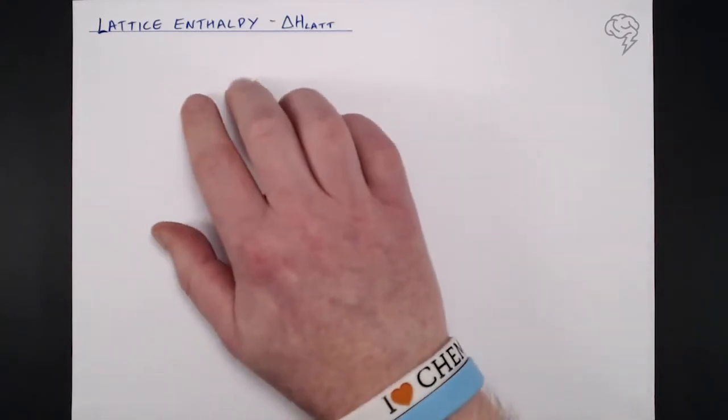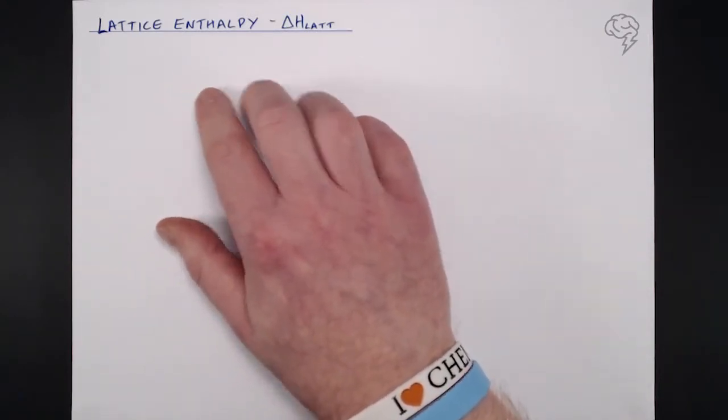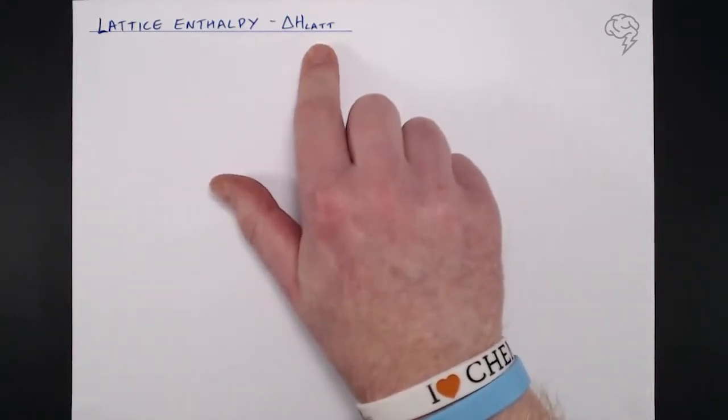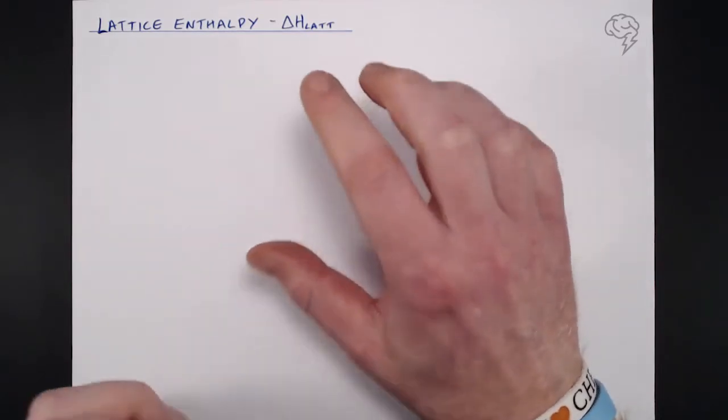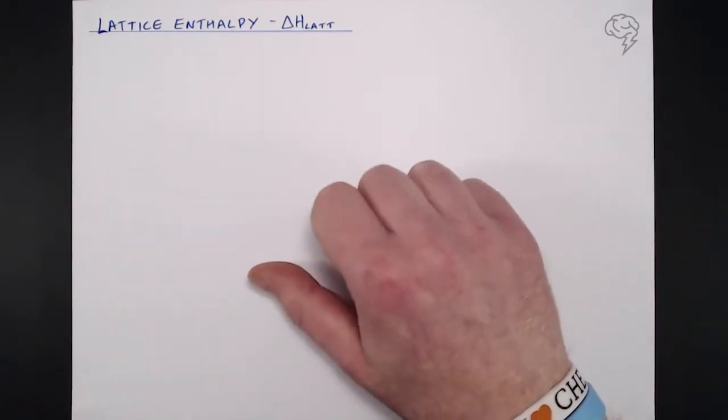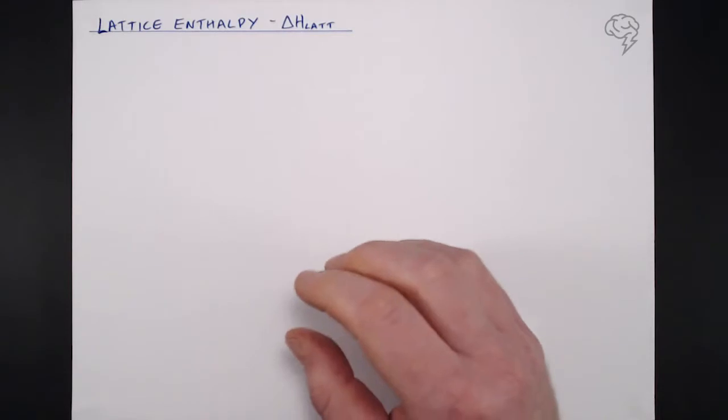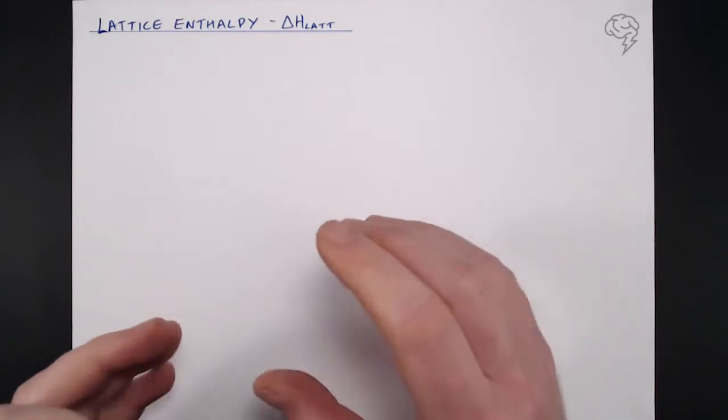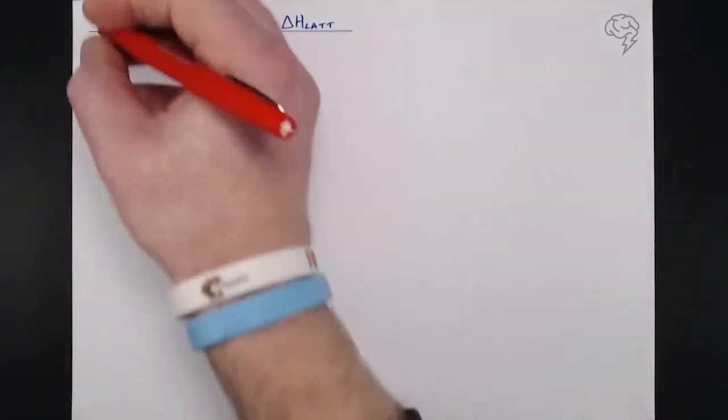We're going to dive right in on Lattice Enthalpy, or Delta H Lat. This concerns salts, ionic substances, and the enthalpy changes associated with them. So what do I mean by lattice enthalpy?